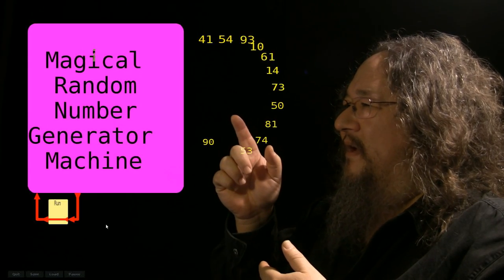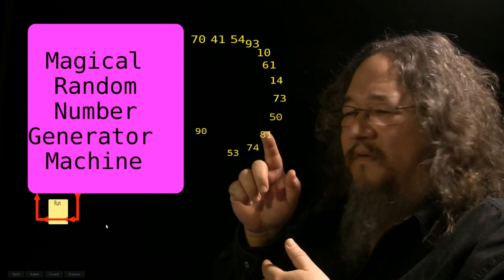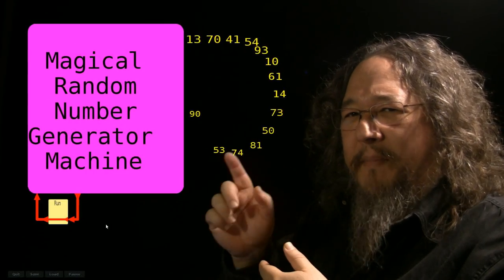Wait a minute. Seventy-three odd. Fourteen even. These are just alternating. Even odd, even odd, even odd. So, how can that be random? It's a pattern.